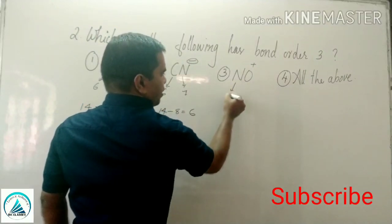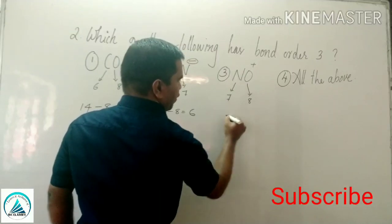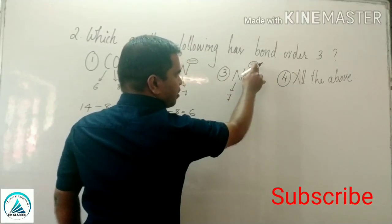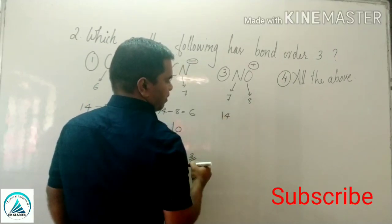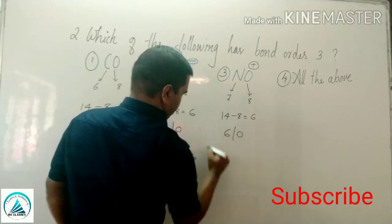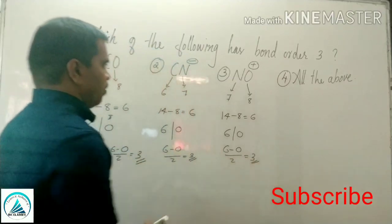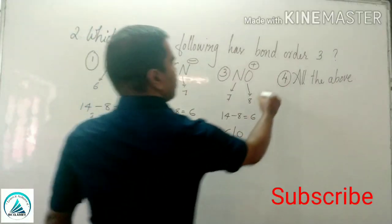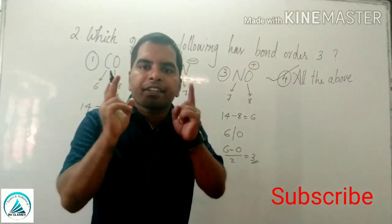Nitrogen atomic number 7, oxygen atomic number 8, total number of electrons 15. There is one positive charge, so subtract 1 electron — total number of electrons = 14. Then subtract 8 electrons, remaining 6 electrons. Bond order = (6 minus 0) divided by 2 = 3. All three options have bond order 3.